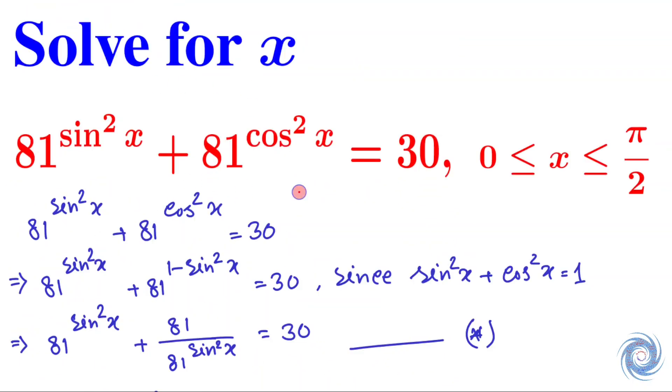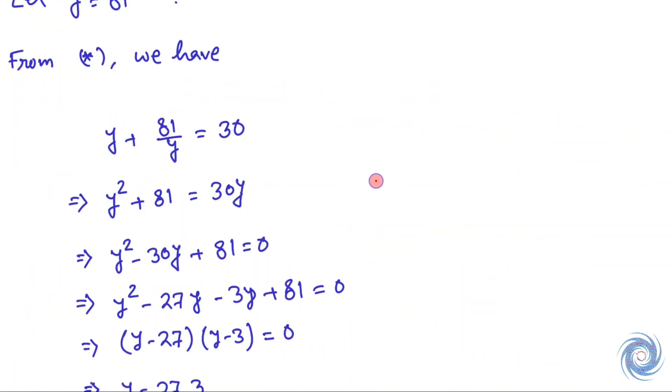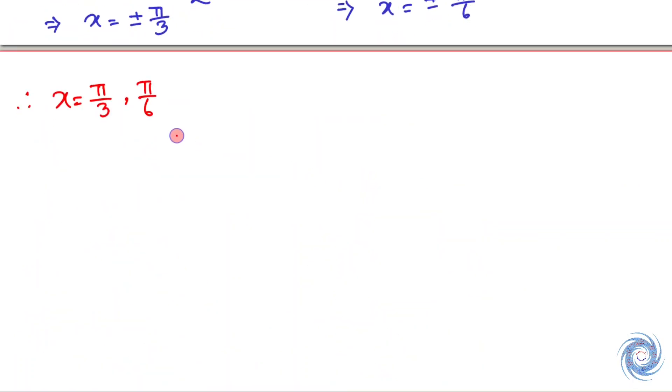So we are supposed to solve this equation for x, and finally we get x = π/3 and π/6. So we are done. Thank you.